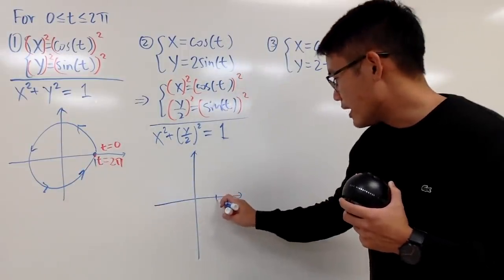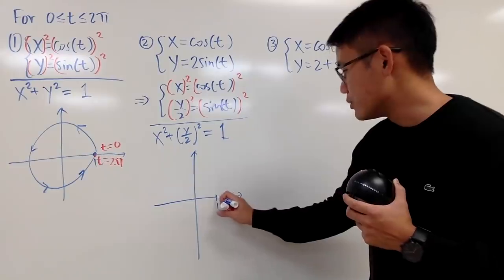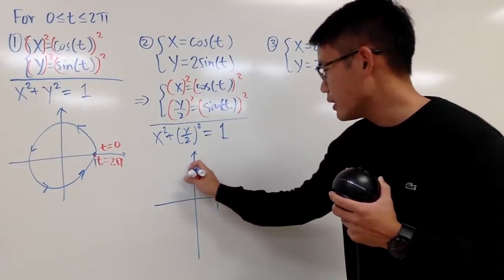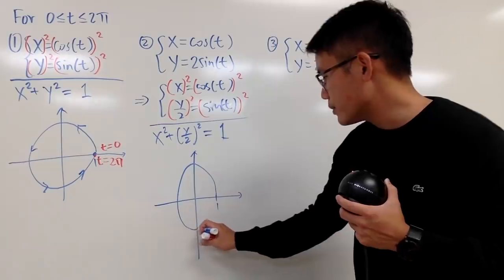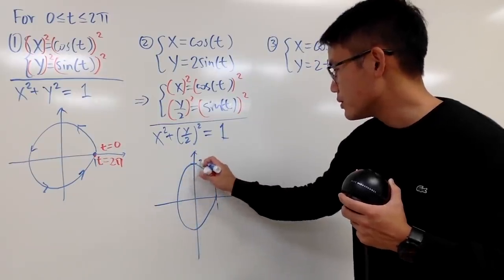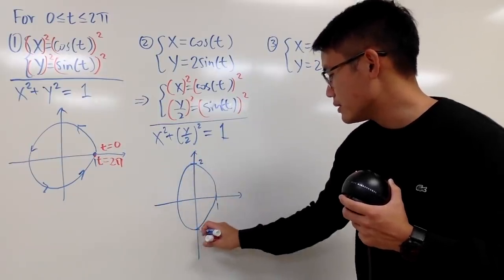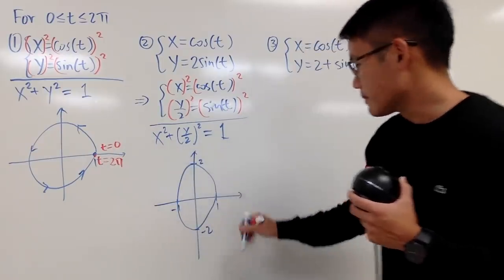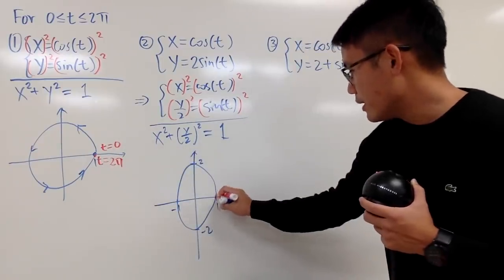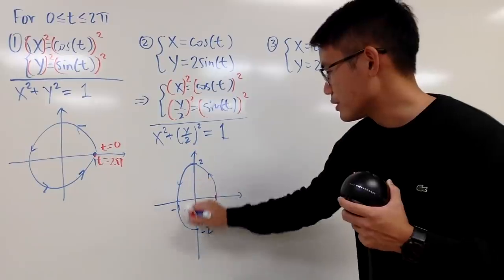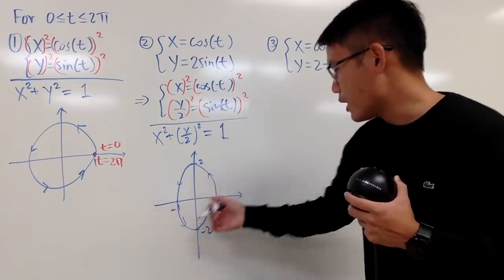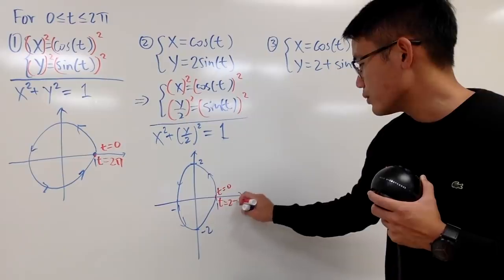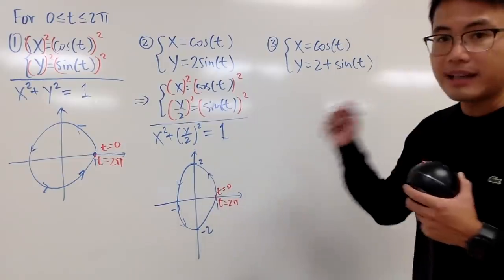Similar to before, you start at (1, 0) when t = 0, then travel up to y = 2, then down to y = -2, and the x extent goes to -1 on the other side. You draw the arrows showing counterclockwise direction, starting and ending at t = 0 and t = 2π.